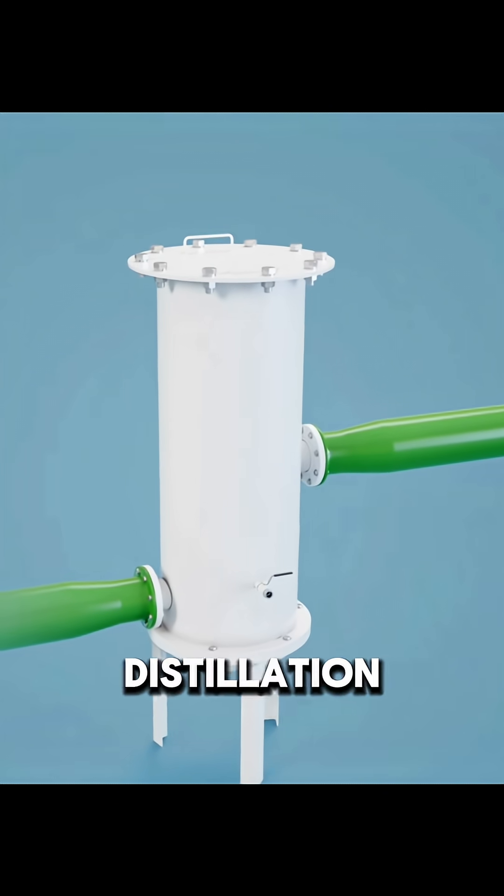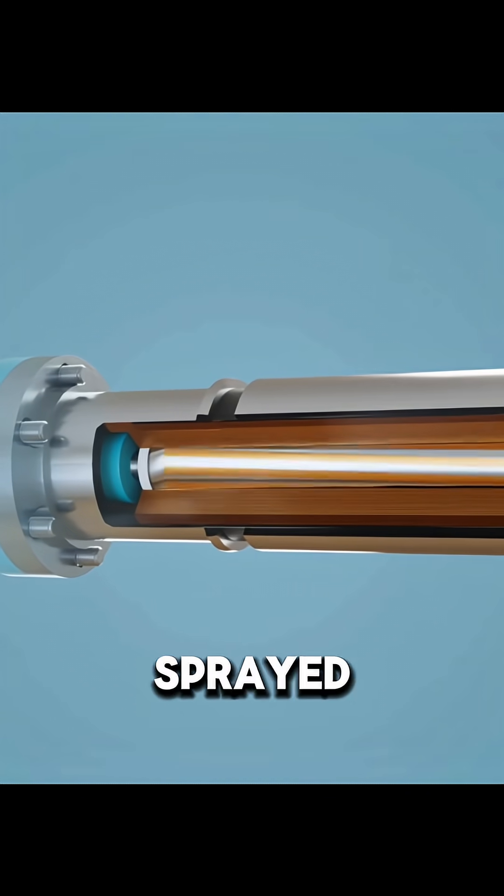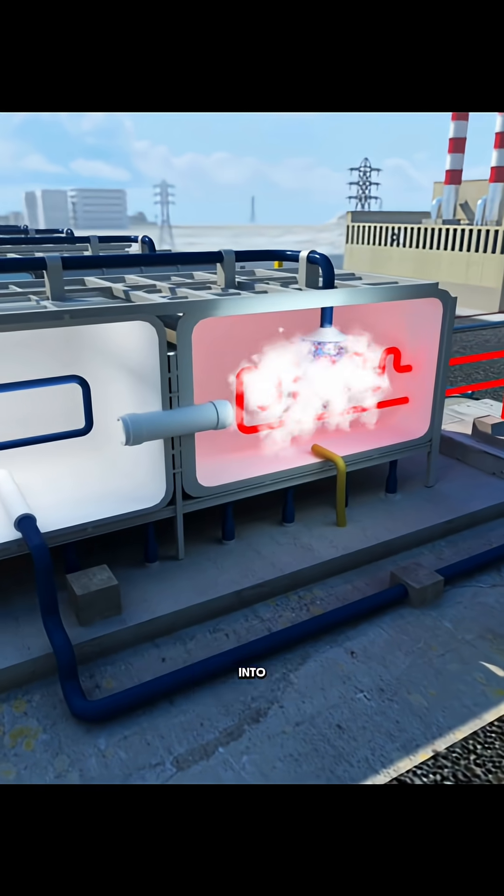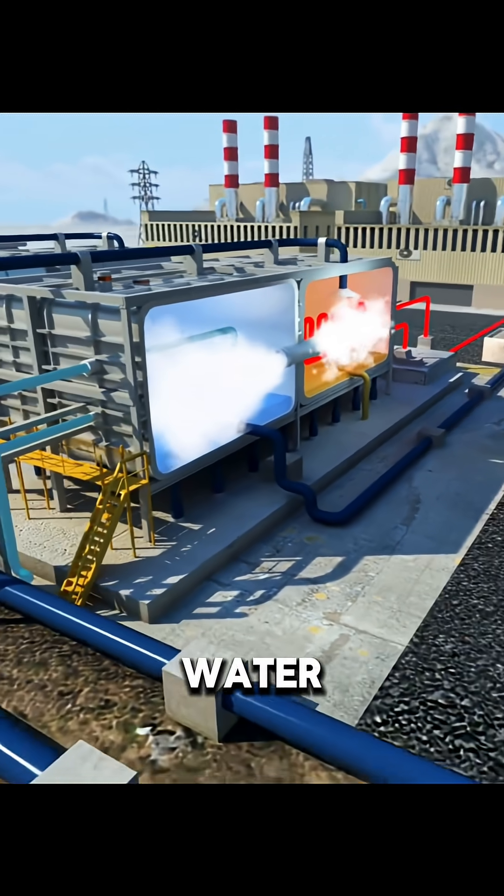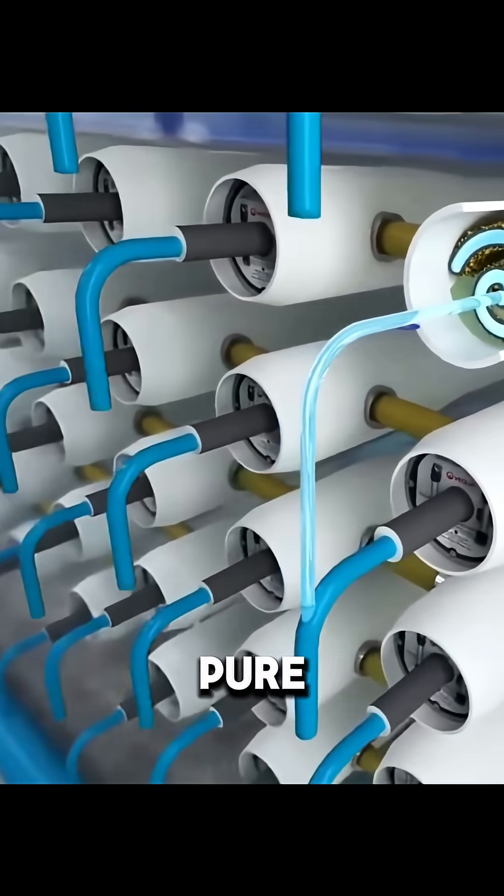There's also an older method, distillation. Seawater is sprayed onto hot metal pipes, turns into steam, and then condenses back into clean water. That's how seawater becomes pure freshwater.